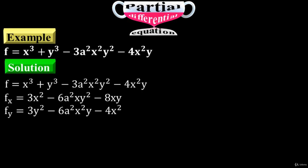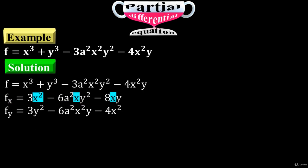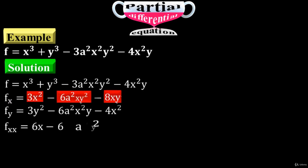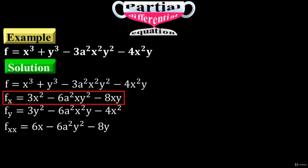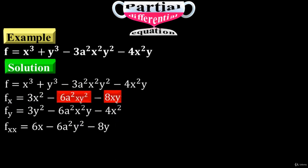Now go for the second order. Take f sub x and differentiate it first with respect to x — these are the x variable terms. Differentiation of f sub x with respect to x is 6x minus 6a squared times y squared minus 8y. Then differentiate it with respect to y — y variables exist at two places. Differentiation of f sub x with respect to y is minus 12a squared times xy minus 8x.